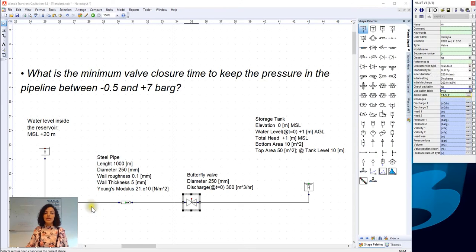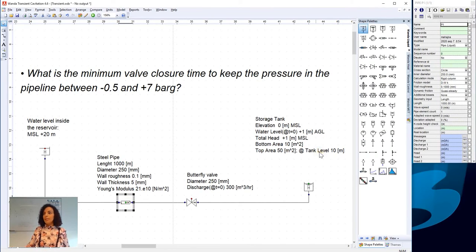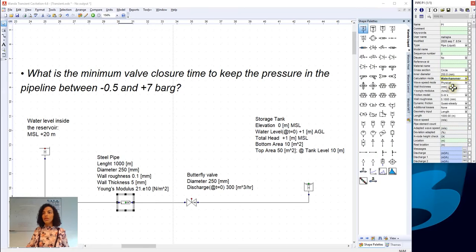Now, we want to update the wave speed value in the pipeline system. So, here, instead of having the calculation mode at rigid column, we use water hammer. And we insert our values. So, for wall thickness, we insert 5 millimeters. And for Young's modulus, we insert 21 to the power of 10. And if we look, the calculated wave speed in Wanda is equal to 1183 meters per second, as we have calculated from before.